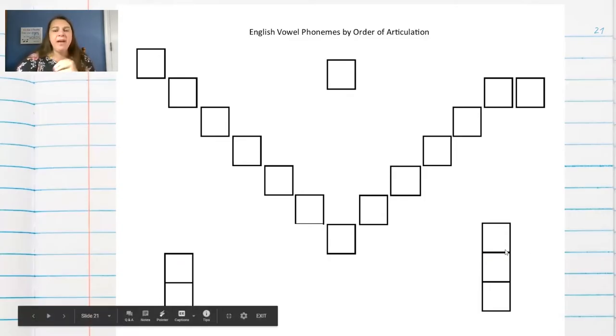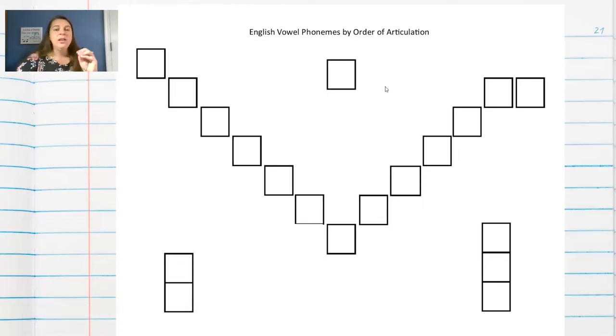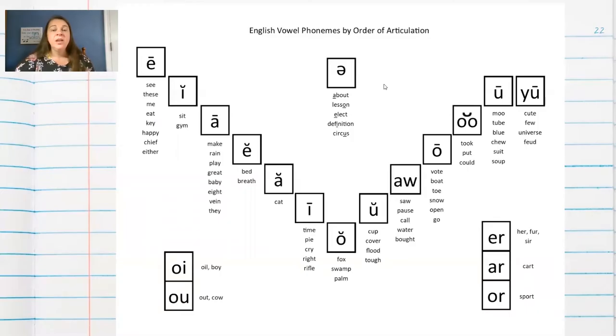Then we have some other vowel sounds that are sort of outliers, which is why they're not along the chin valley, or we call this sometimes vowel valley. All right, so here's vowel valley all filled in.